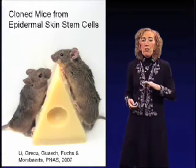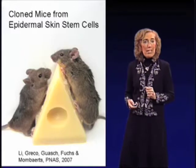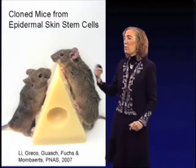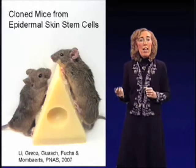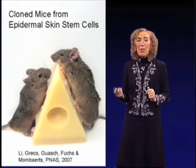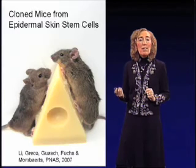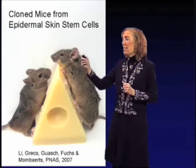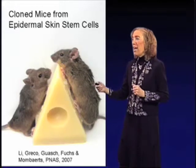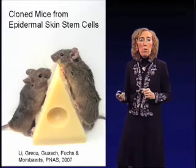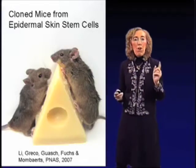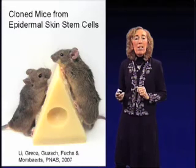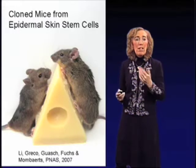We then take the blastocysts and put them into a female host, which three weeks later produces pups — mice — and some of those mice are healthy and continue to grow to adult age. In fact, these mice are now several years old, perfectly healthy, and we cannot tell the difference between these mice and a normal mouse. These mice came from an oocyte with a diploid somatic cell, and that somatic cell came from a skin stem cell, the type of cells my laboratory works on.